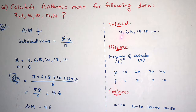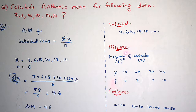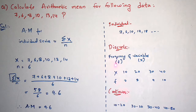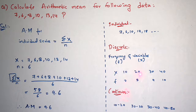How to identify whether the question belongs to individual series: the data will be in linear form with only variables given, but frequency will not be given. In discrete series, both variables (x) and frequency (f) will be given. If there is presence of both x and f in the question, then you can identify that the question belongs to discrete series.